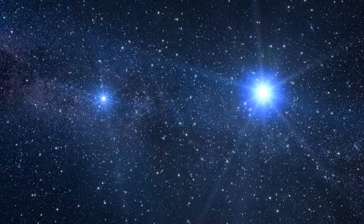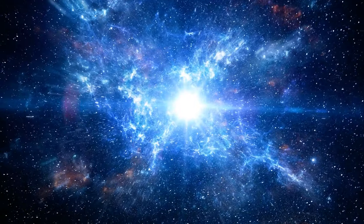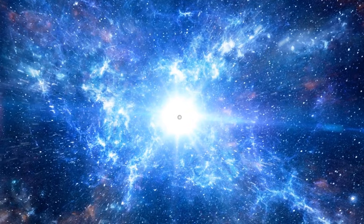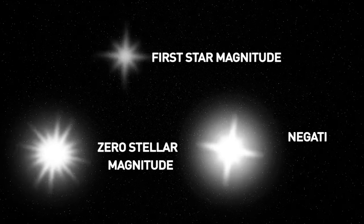The brighter a star is, or planet, or moon, the lower its magnitude. Thus, stars brighter than first magnitude are either zero magnitude or negative magnitude.